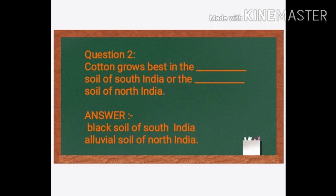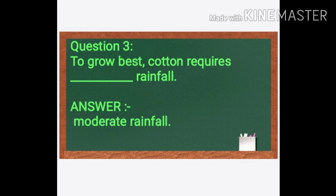Next: Cotton grows best in the blank soil of South India or the blank soil of North India. Cotton grows best in the black soil of South India, and in the alluvial soil of North India. To grow best, cotton requires moderate rainfall.